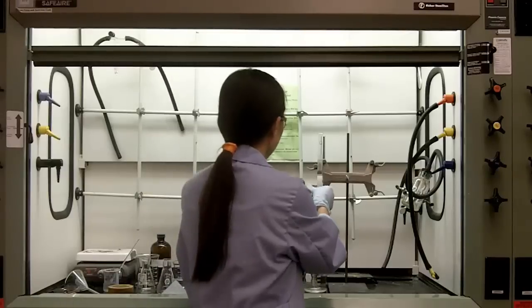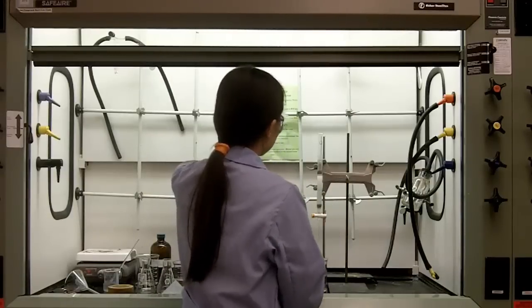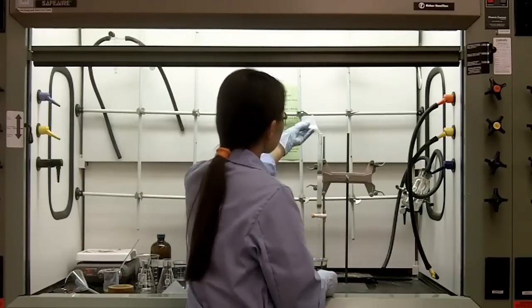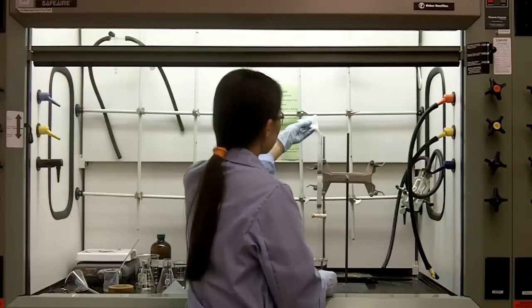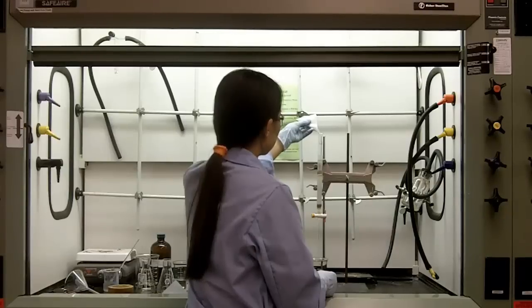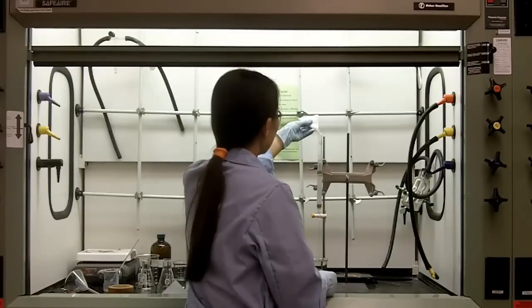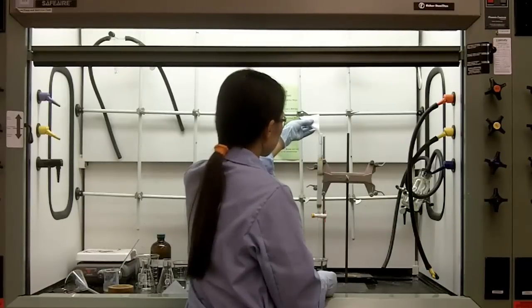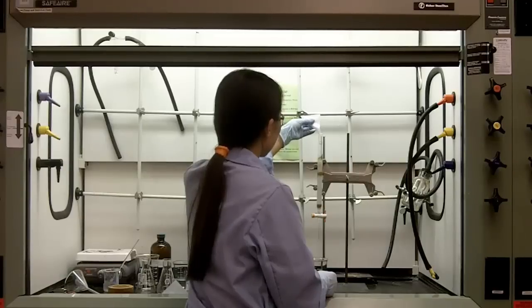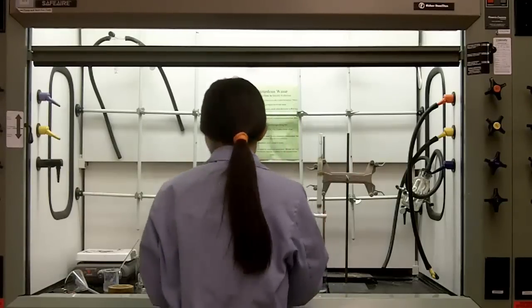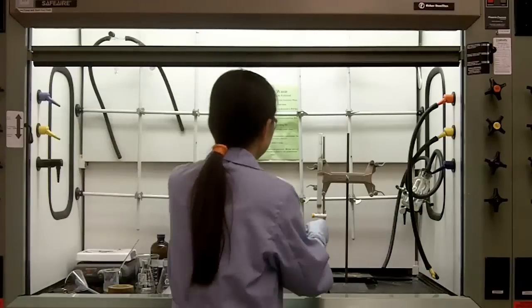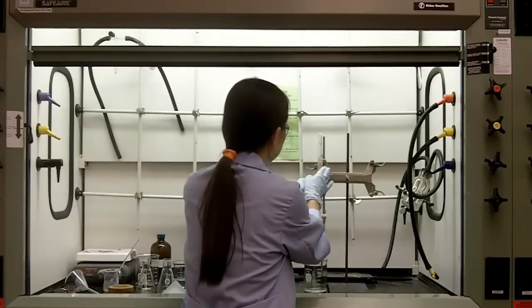And then, you have your sand ready in the weighing paper. You'll pour it gently and slowly through the top of the glass column. The hexane will hold the sand and then load it down slowly to the surface of the silica gel. So you'll have a nice, flat surface.